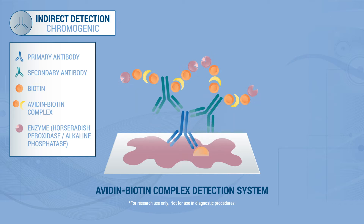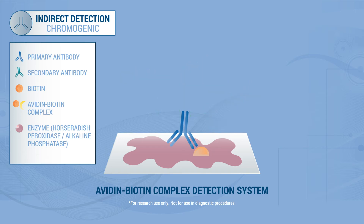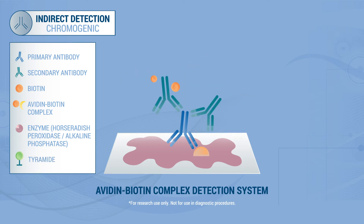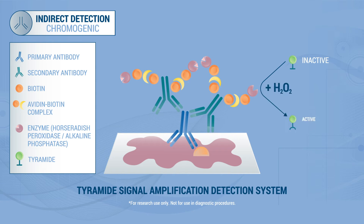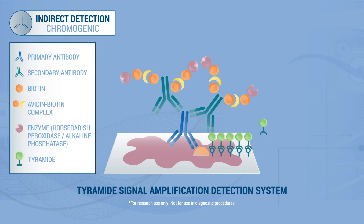Sensitivity can be increased further using a tyramide signal amplification system. The assay sequence includes a first round of ABC incubation followed by tyramide. The enzyme of the ABC complex activates tyramide, enabling many molecules to cross-link with proteins near the binding site of the primary antibody.